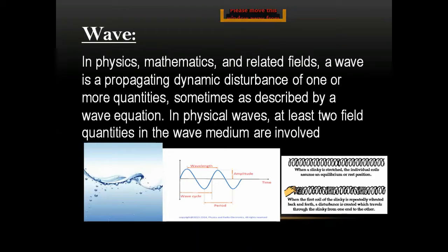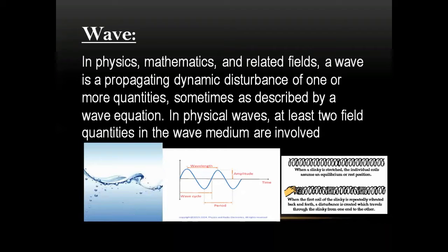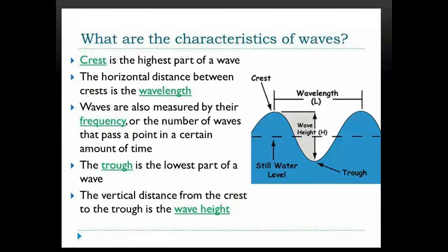The first definition is wave — it is a phenomenon in which a disturbance is created in a medium. A wave is a vibratory disturbance through a material, medium, or space. A medium is necessary for the propagation of waves. Waves transfer energy without transferring mass, meaning the disturbance is moving, not the mass.